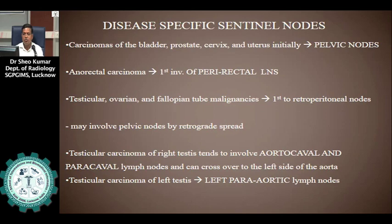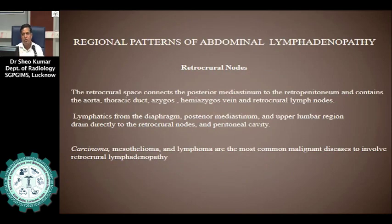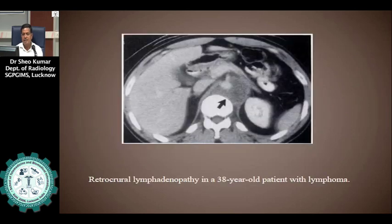Disease-specific sentinel nodes: in carcinoma of the bladder, prostate, cervix, and uterus, the pelvic group of lymph nodes are initially involved. In anorectal malignancy, the perirectal group is initially involved. In testicular, ovarian, and fallopian tube malignancy, initial involvement is the retroperitoneal nodes, which may involve the pelvic nodes by retrograde spread. Right testicular carcinoma tends to involve the aortocaval and paracaval lymph nodes and can cross to the left side of the aorta, while left testicular carcinoma involves the left para-aortic group.